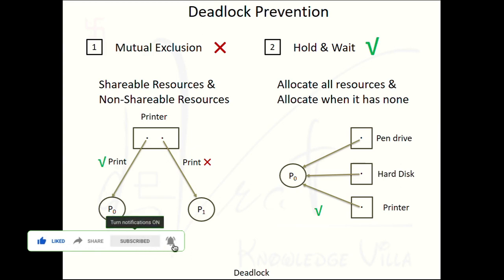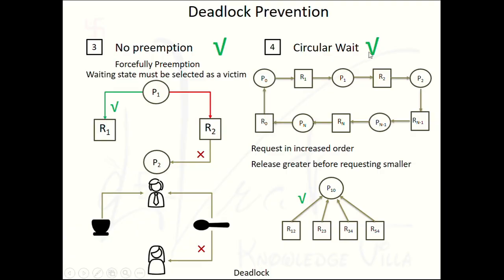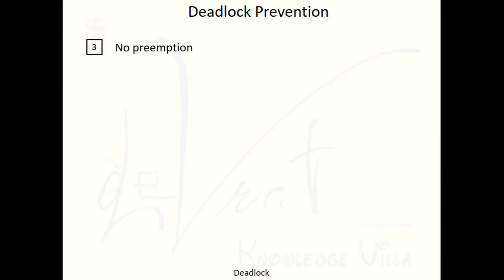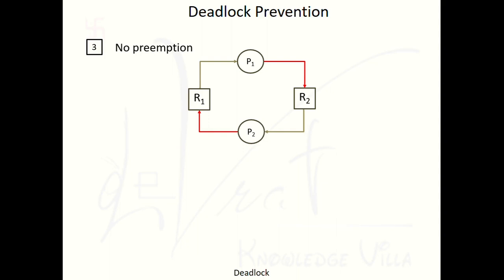So you will be able to understand the violation of no preemption and violation of circular wait. Let's start with the first condition: violation of no preemption. As we discussed in our introductory sessions, there are two processes P1 and P2, and two resources R1 and R2. Right now, P1 is holding resource R1 and making a request for resource R2.